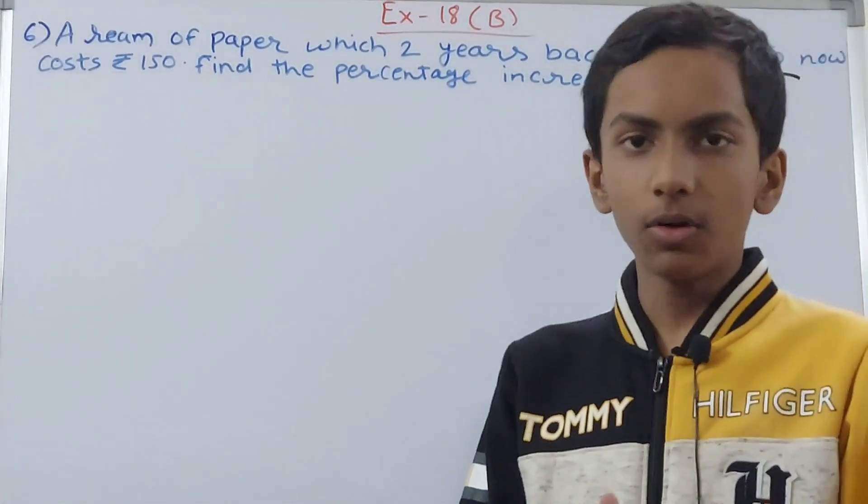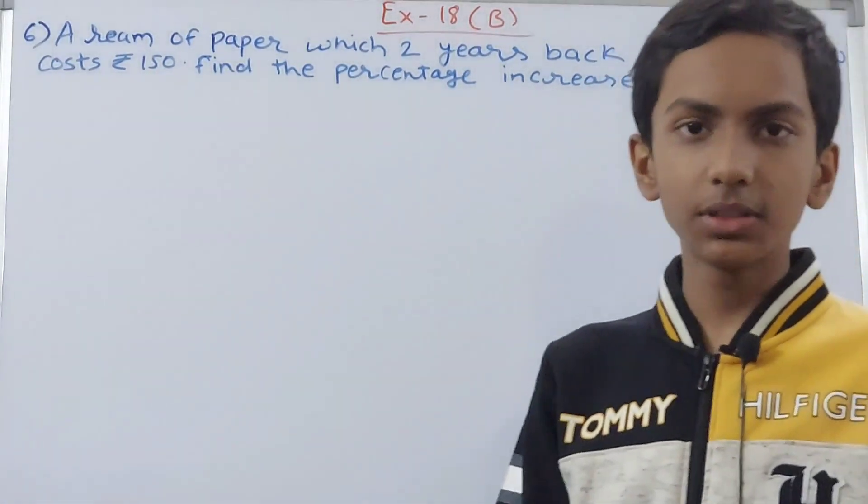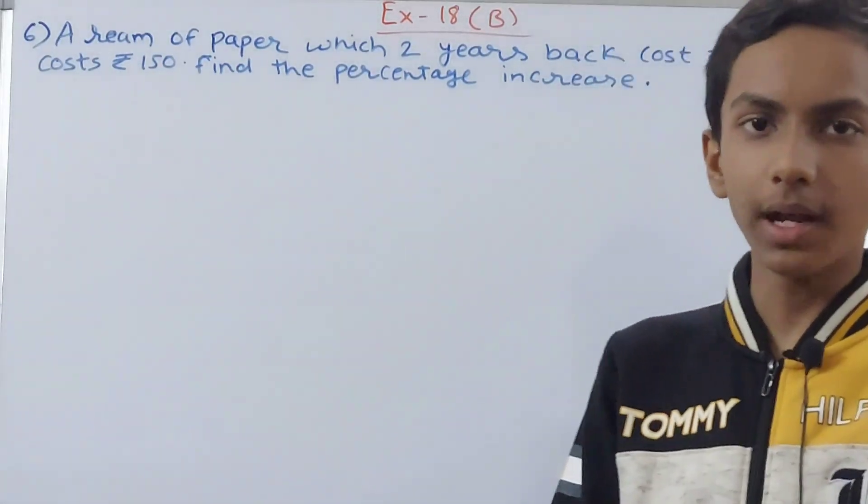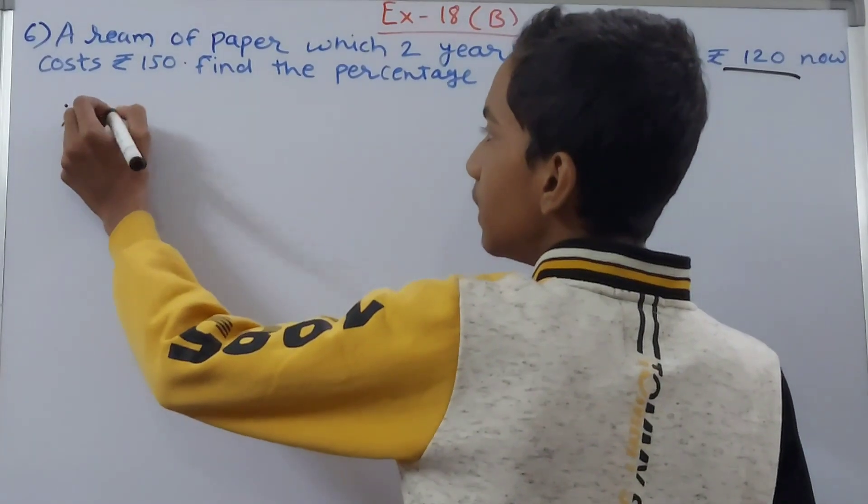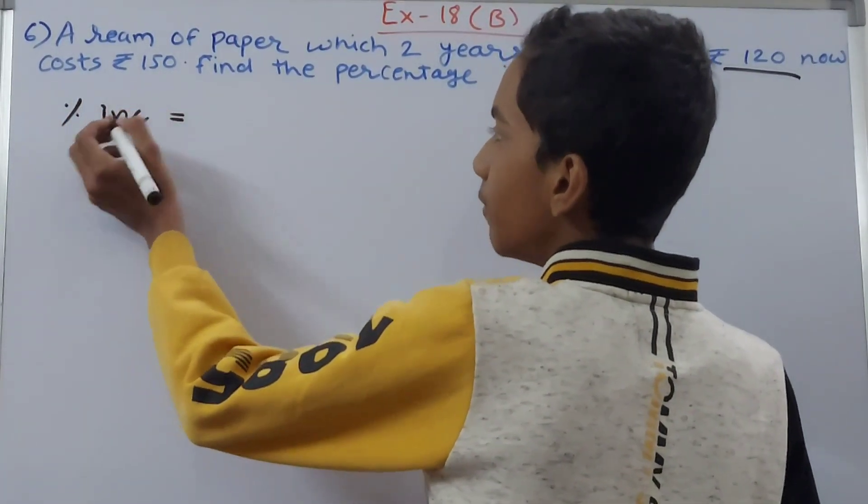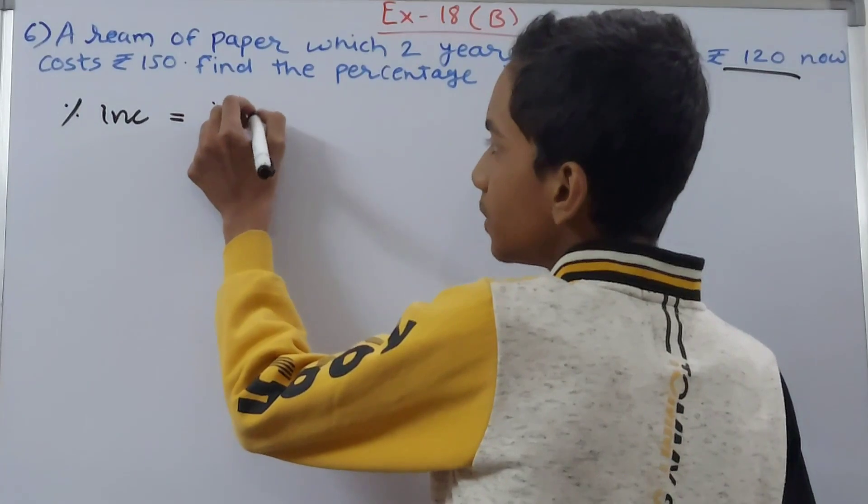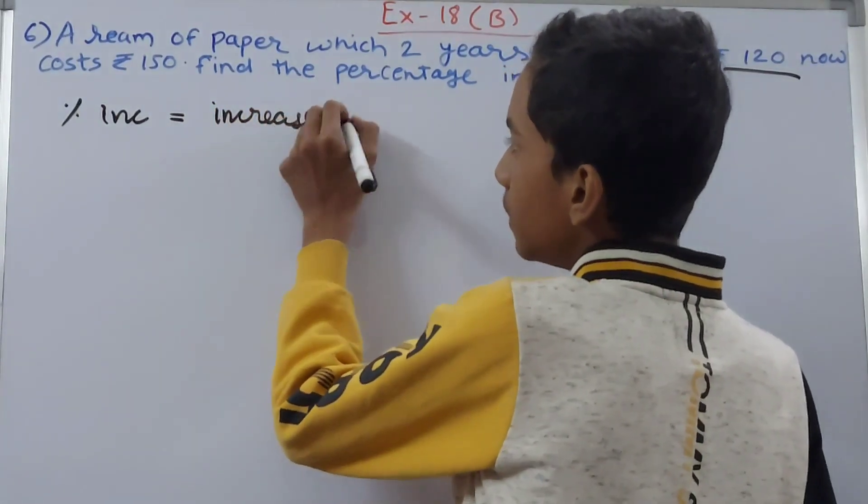Before finding the percentage increase, we need to know the formula for finding percentage increase. Percentage increase is calculated as: increase in value divided by actual value, multiplied by 100.